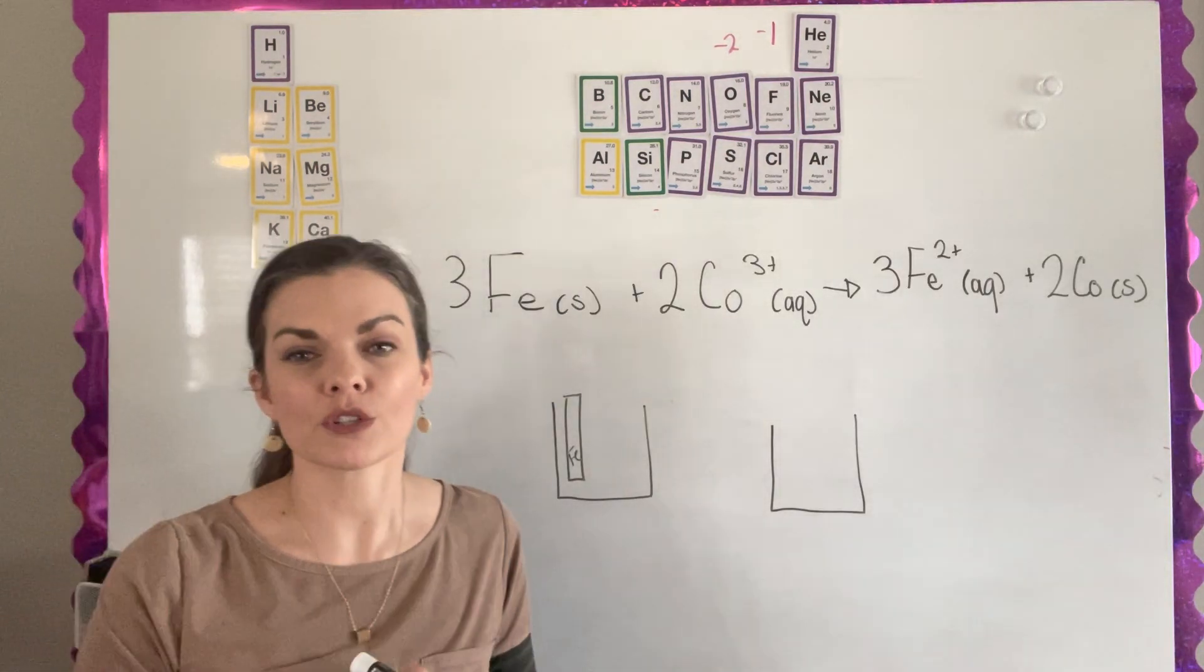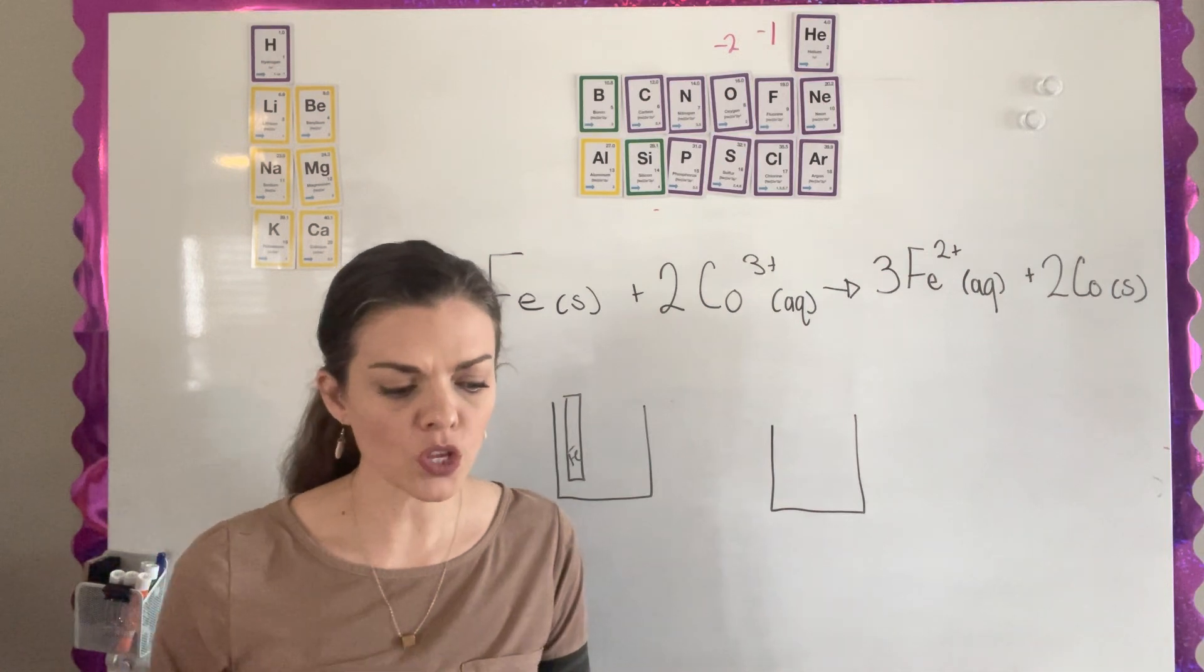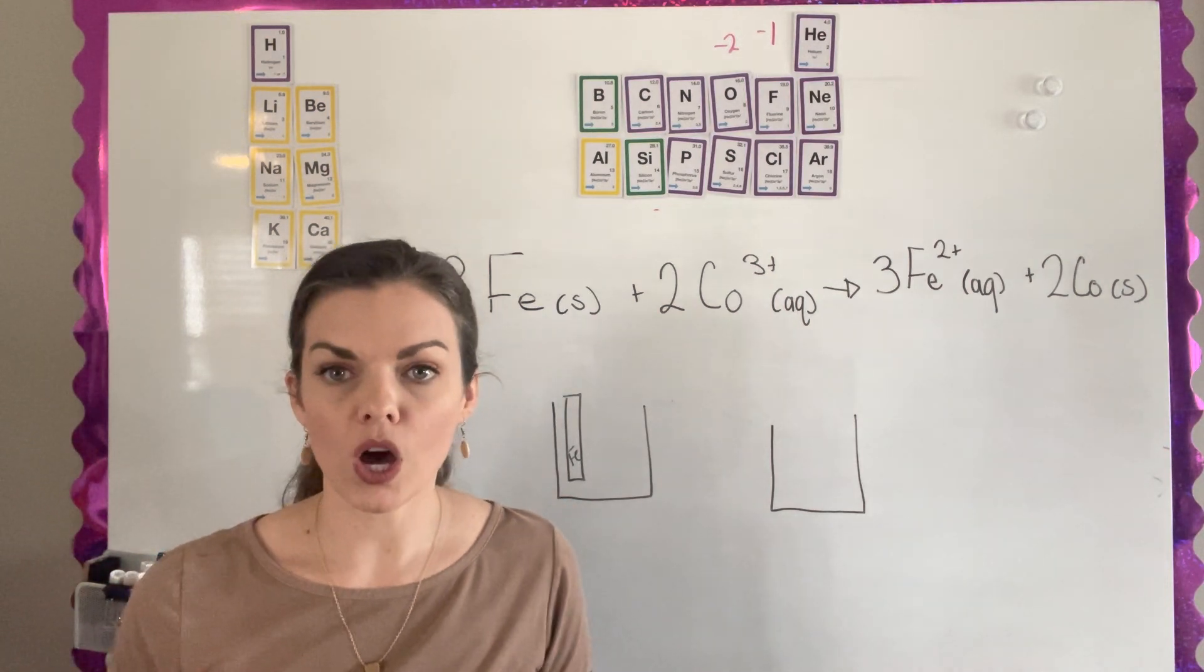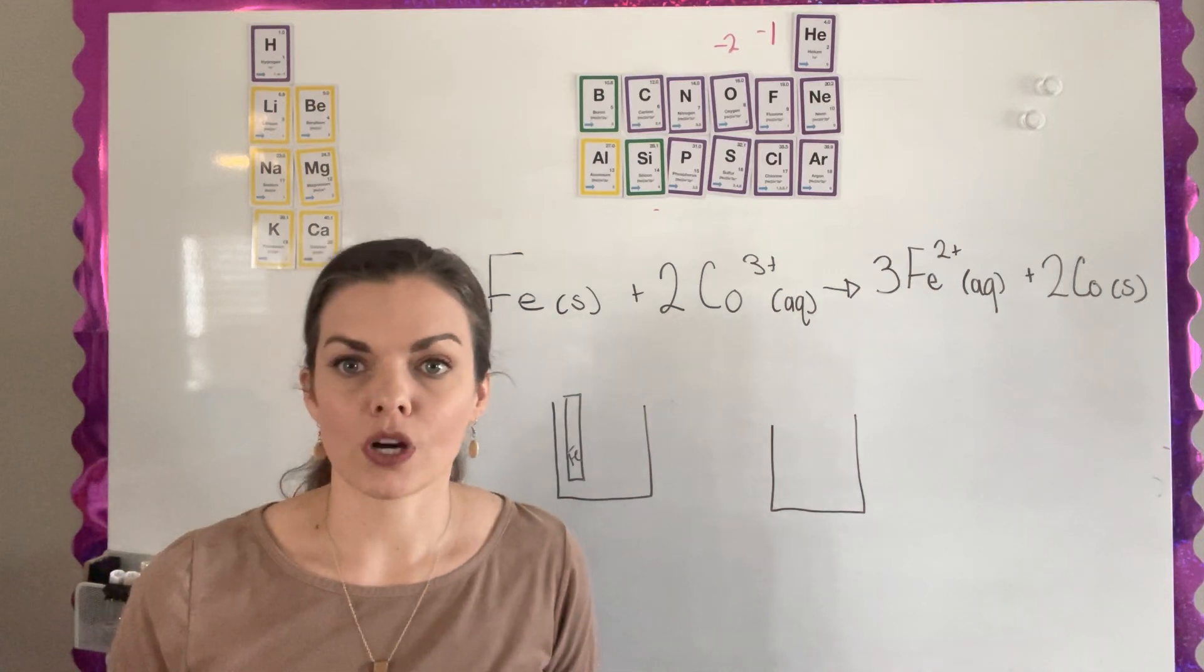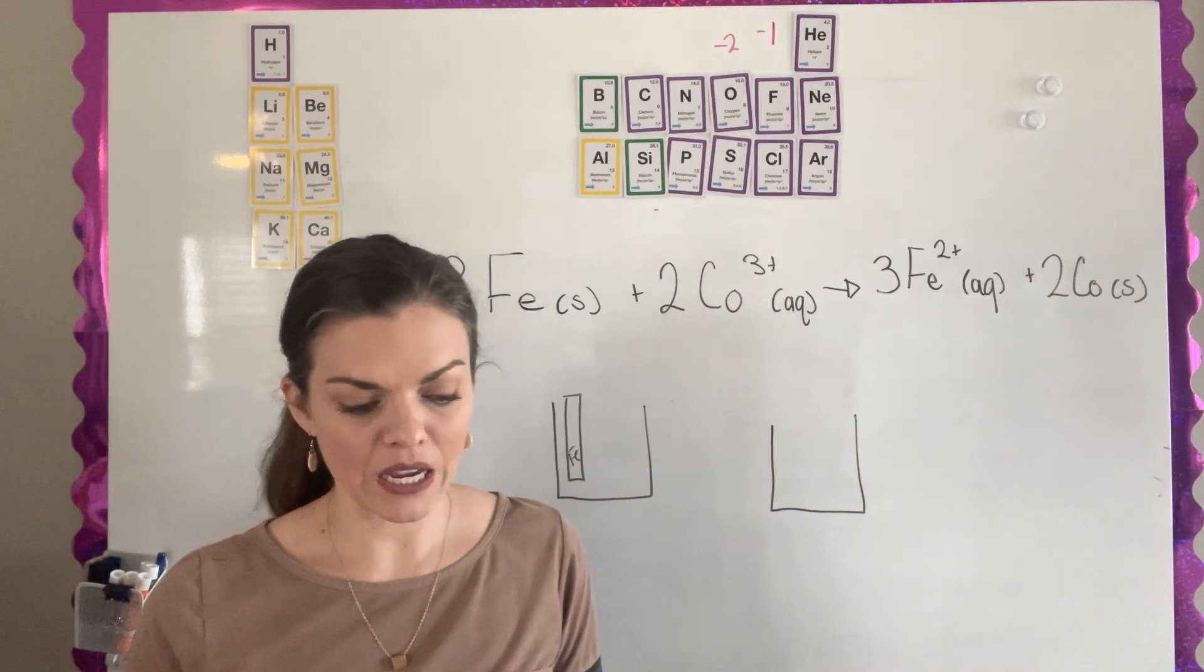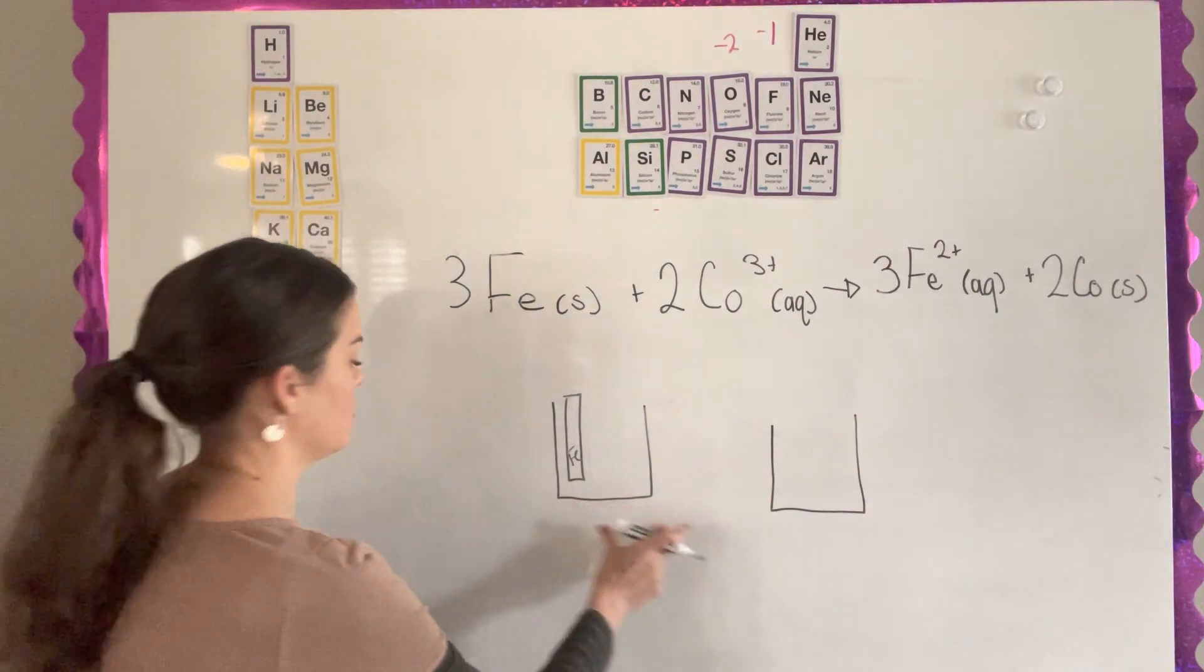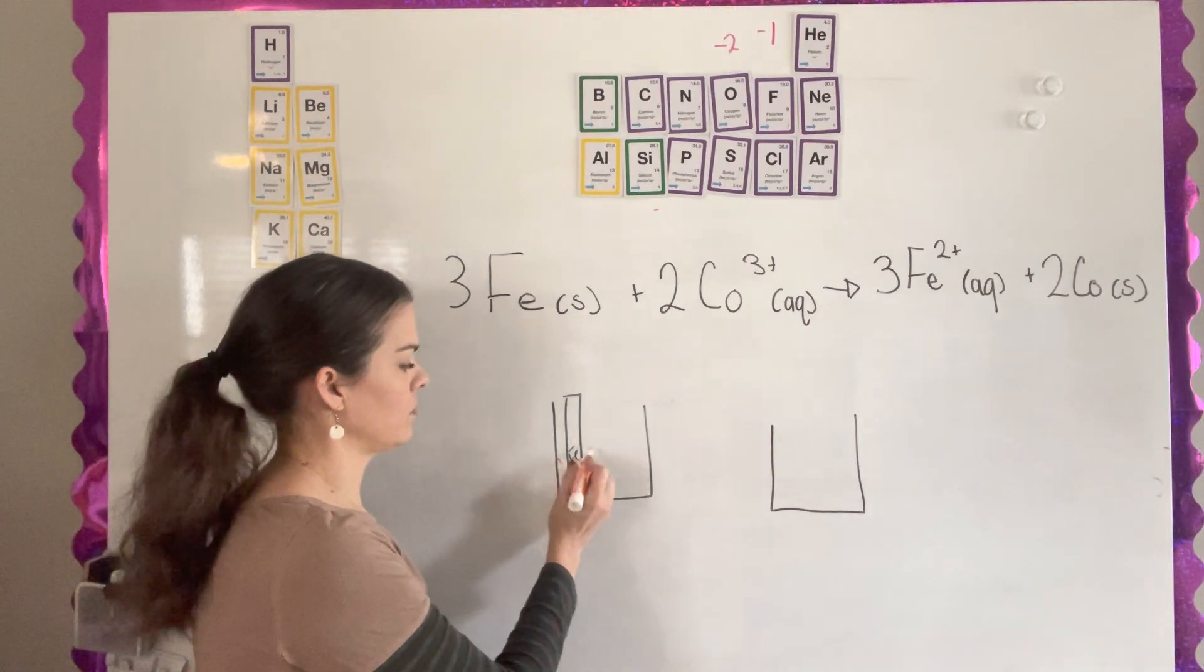I'm going to go over question number six, and then we'll actually come back to question number five. For question number six, they actually give you two reactions that power a galvanic cell, and they want you to draw the cell, labeling each side, labeling the solution, talking about which way the electrons flow and all of that information. You're just going to have to bear with me because I am definitely not an artist. In your galvanic cell, you have two beakers or vessels that you'll use in lab. In each one, you're going to have a liquid.